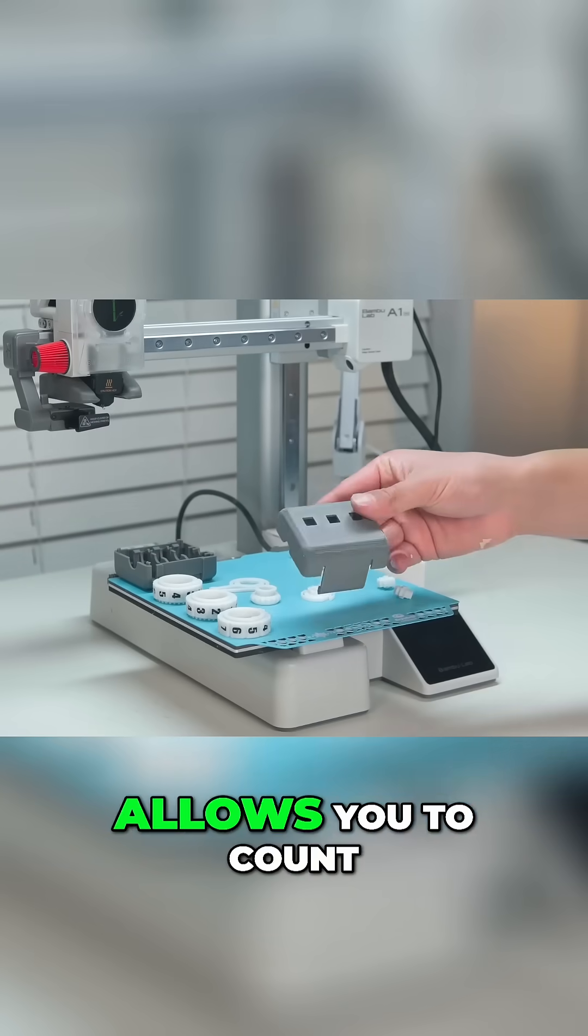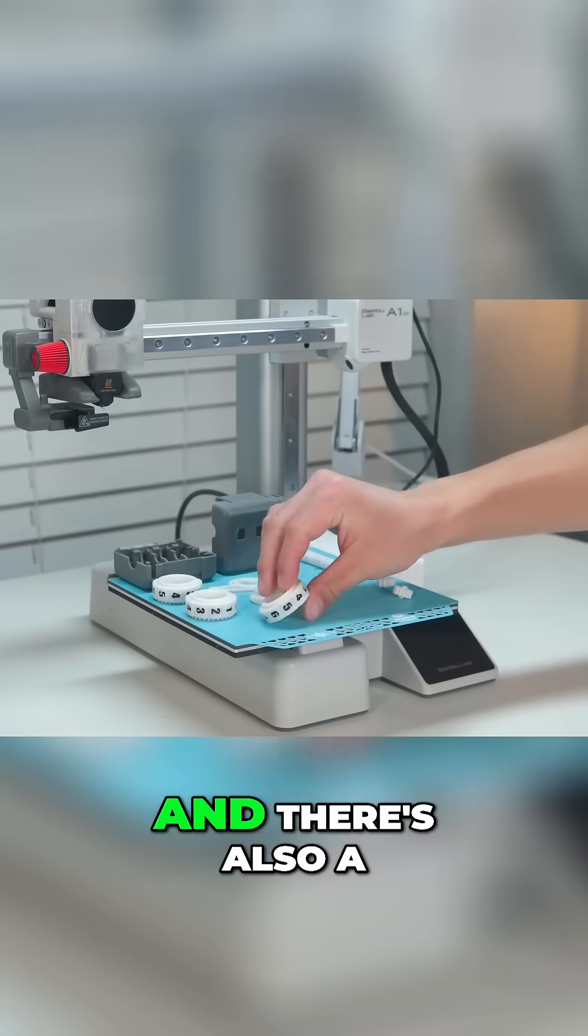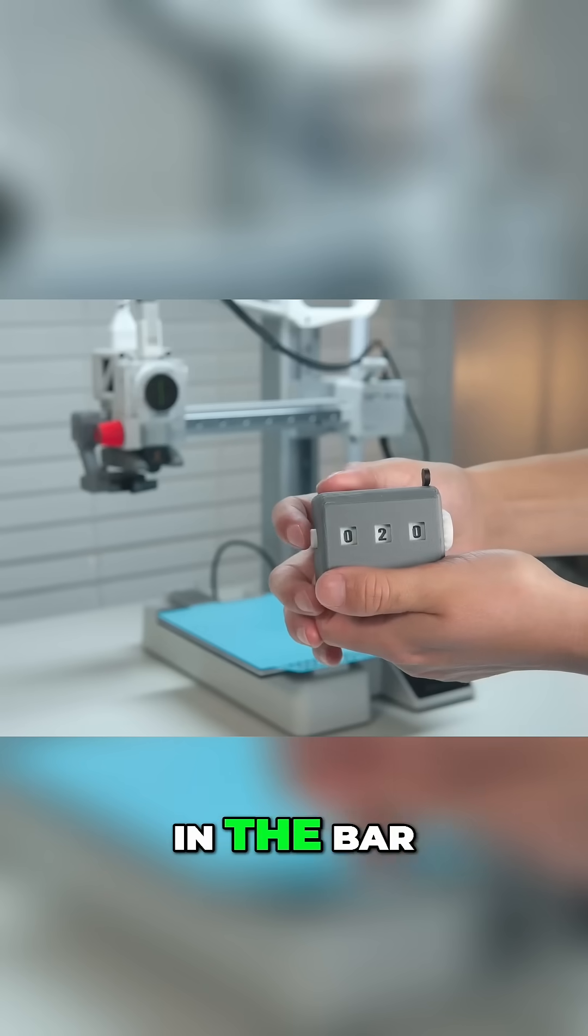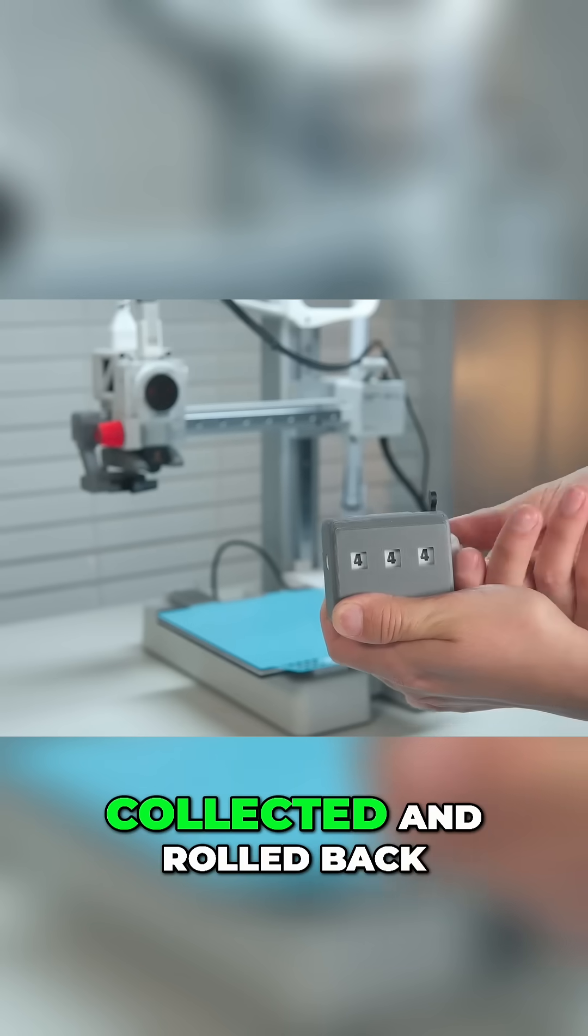This fully mechanical counter allows you to count up to 999 of whatever you're trying to count, and there's also a super easy way to reset it. You just push in the bar, spin the little dial on the side, and you'll see all those numbers roll back to zero.